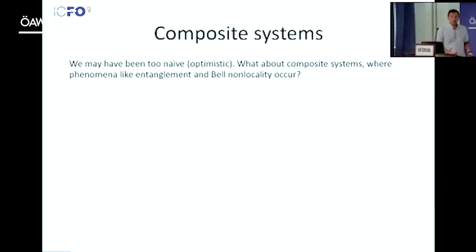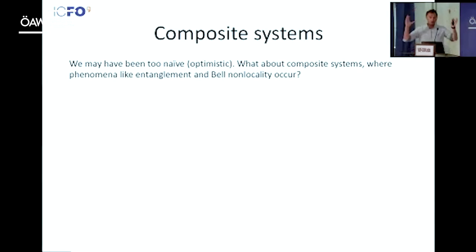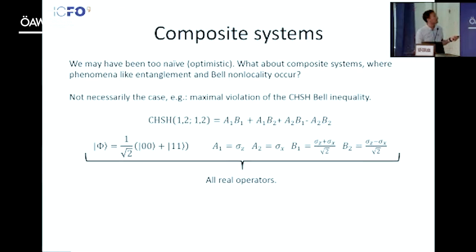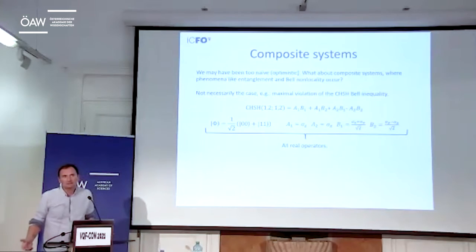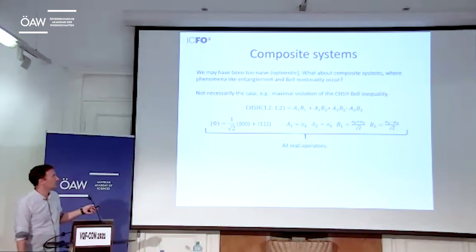Maybe we're a bit too naive, because how can you expect to prove such results using single systems? Quantum theory becomes really interesting when you have different systems with entanglement, locality — then you may have more interesting phenomena. So maybe this is the place where to look for the gap between complex and real quantum theory. But this is not guaranteed: if you take CHSH, the paradigmatic example for Bell inequality, you reach the maximal violation of CHSH with real operators. So locality may help, but it's not sufficient, because I can reach the maximal violation of the Bell inequality with real operators.